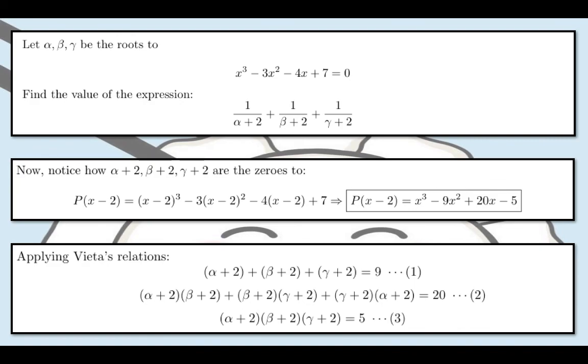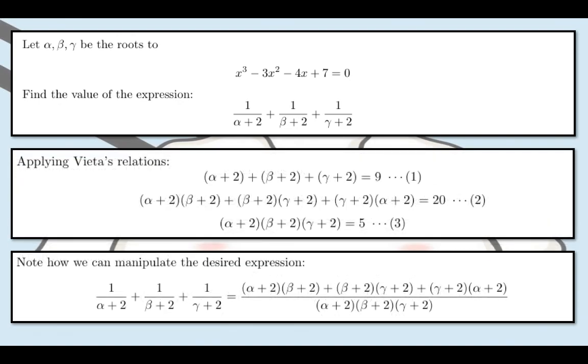Now, let's apply these three equations to get the value of the expression. Note how we can manipulate the desired expression: 1/(α+2) + 1/(β+2) + 1/(γ+2) equals the product of α+2, β+2, and γ+2, other than the sum of α+2, β+2, and γ+2 taken two at a time, divided by their product.